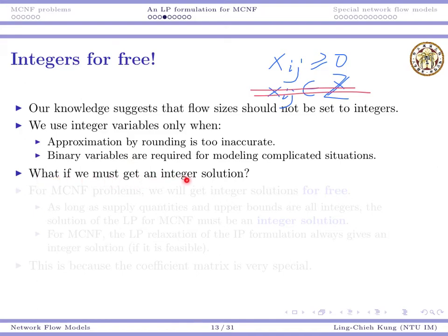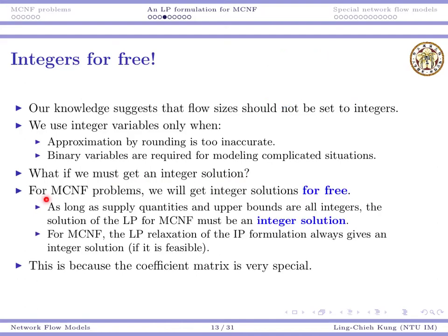So, now there is a question. What if we must get an integer solution? Is there any way for doing that? The good news is, for MCNF problems, MCNF problems are important because of the following reason. Integer solutions will be obtained for free. What does that mean? As long as the supply quantities and the upper bounds are all integers, then the solution of the LP in the previous slides must give an integer solution. Oh, wow.